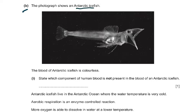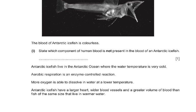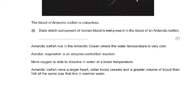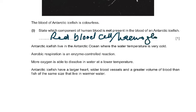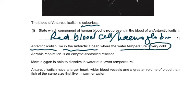Part B: the Antarctic ice fish has colorless blood. Which component of human blood is not present? The red blood cell — also called erythrocyte — or you could say hemoglobin. The blood is colorless, just a clear solution. Antarctic ice fish live in very cold water, where aerobic respiration — an enzyme-controlled reaction — is reduced. More oxygen is able to dissolve in colder water, so there is more oxygen per 100 ml of water.